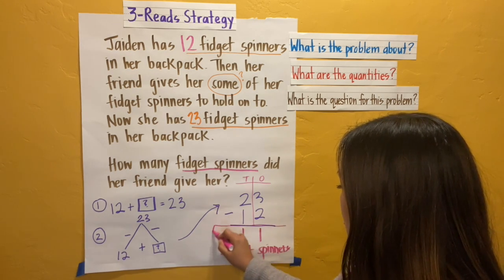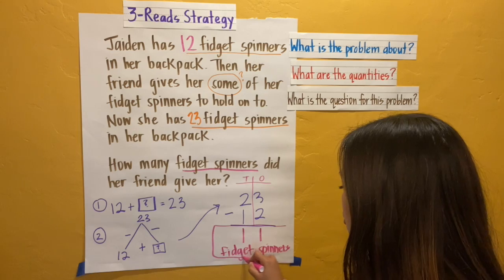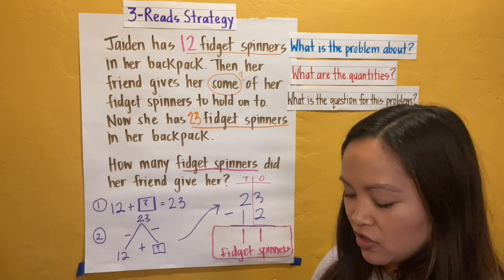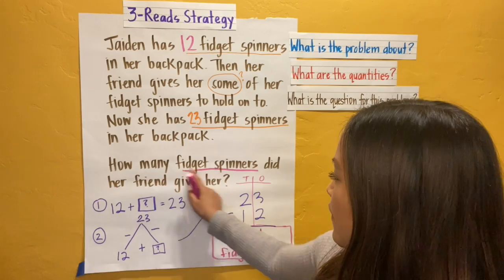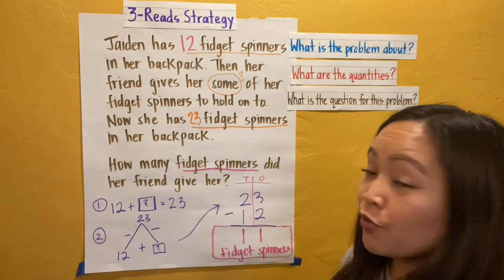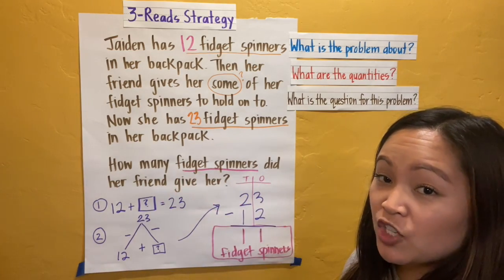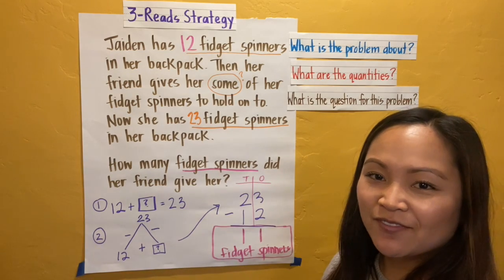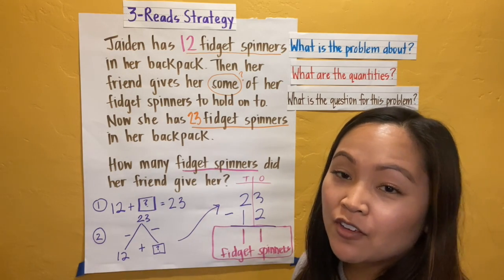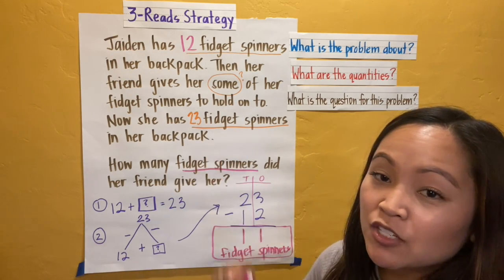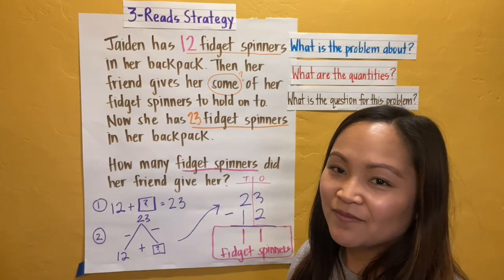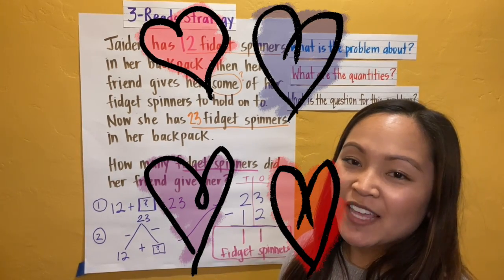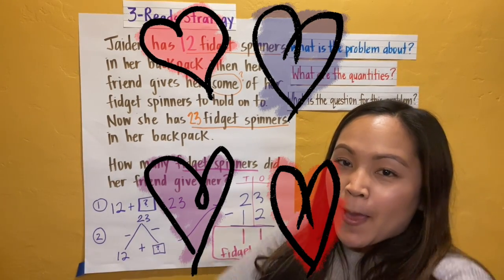And I'm going to box my answer. We always box our answers so we know that that is the answer. How many fidget spinners did her friend give her? Her friend gave Jaden eleven fidget spinners. I can't wait for you guys to use this strategy on some problems. Bye!